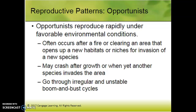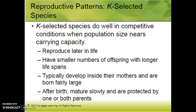Opportunists are specific r-type species that reproduce rapidly under the right conditions. Secondary succession is a great example of a place that opportunists go crazy — there's a fire and there are tons of open niches. Or maybe there's an impact on the earth that wipes out most of the dominant life forms, so then mammals can come out of hiding, speciate like crazy, and proliferate into the mammalian life we see today. We'll talk about punctuated equilibrium and evolution at some point.